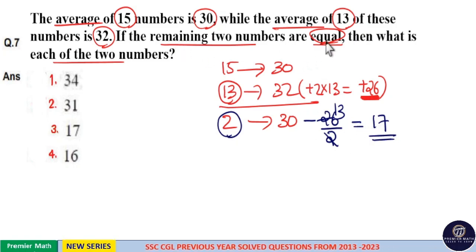Here remaining two numbers are equal. So if the two numbers are equal, means each of them is 17. So option three is your answer.